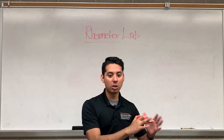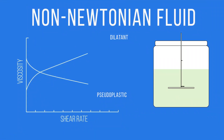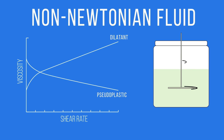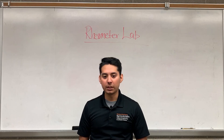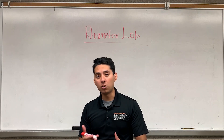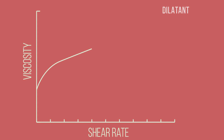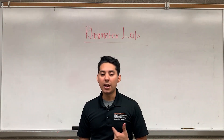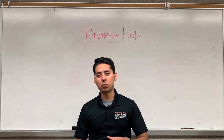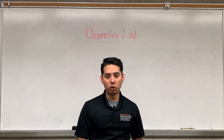On the other hand, non-Newtonian fluids are broadly defined as those fluids in which their shear stress is not directly proportional to the deformation or the shear rate. The most common types of non-Newtonian fluids include pseudoplastics, which have a decreasing viscosity as the shear rate increases, and plastics, which require a certain amount of applied force before flow is induced.